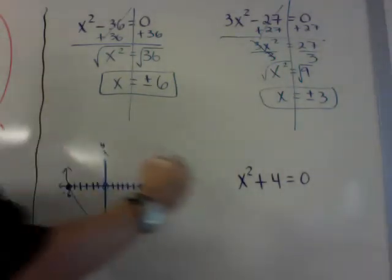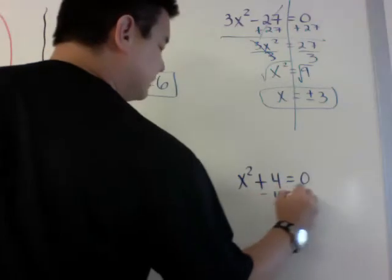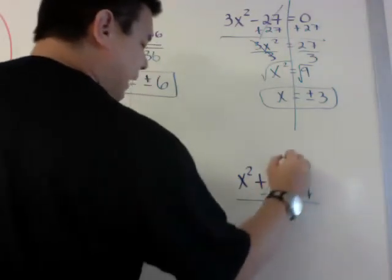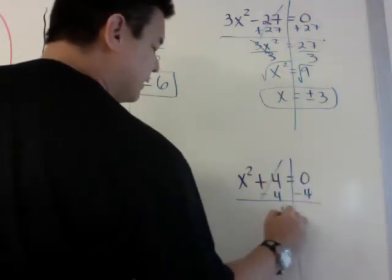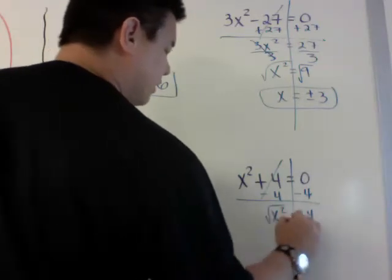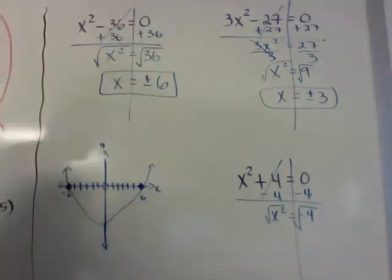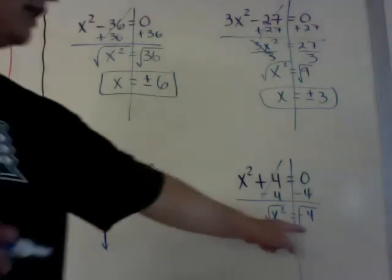Here's a quick example here. I need to minus 4 from both sides. And when I do this, I get x² = -4. When I take the square root of this, what times itself will ever equal to negative 4?